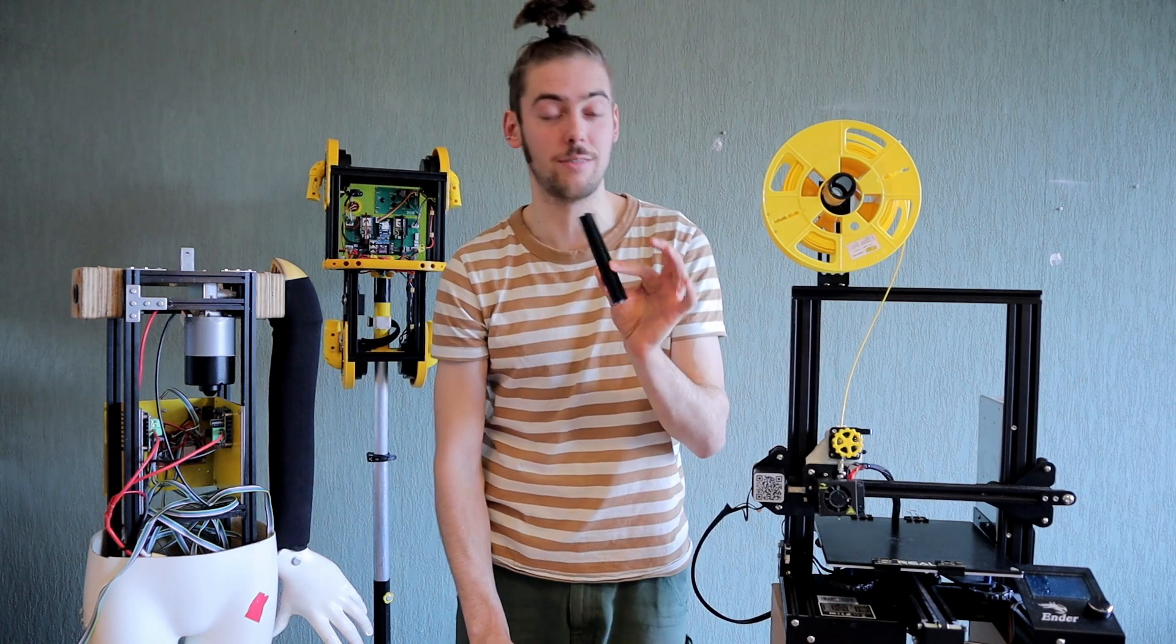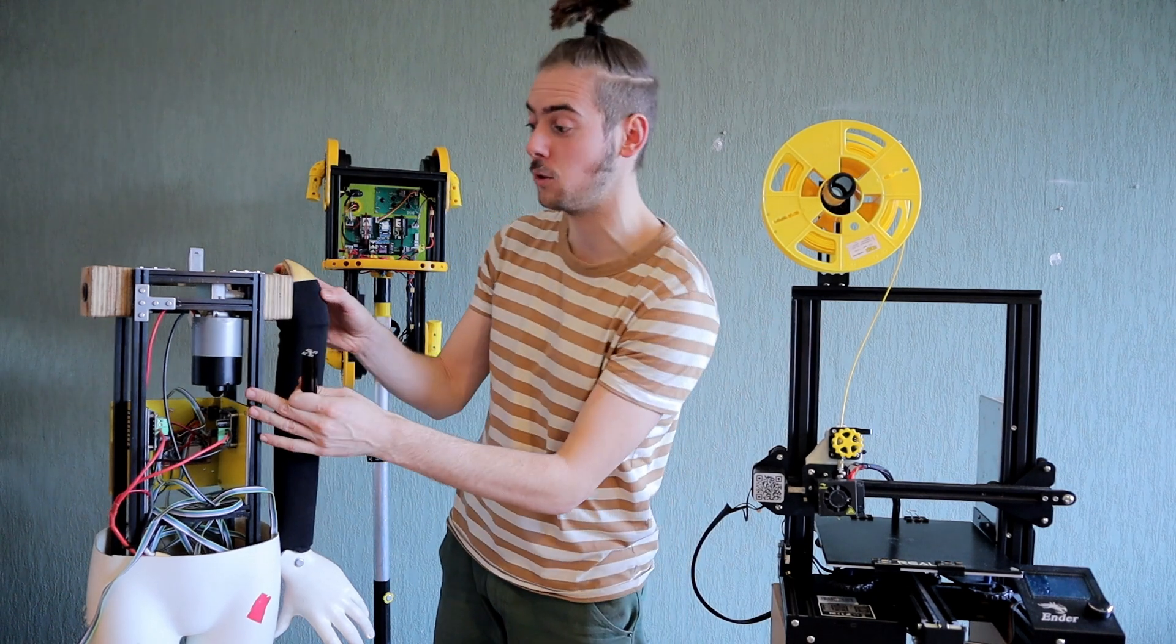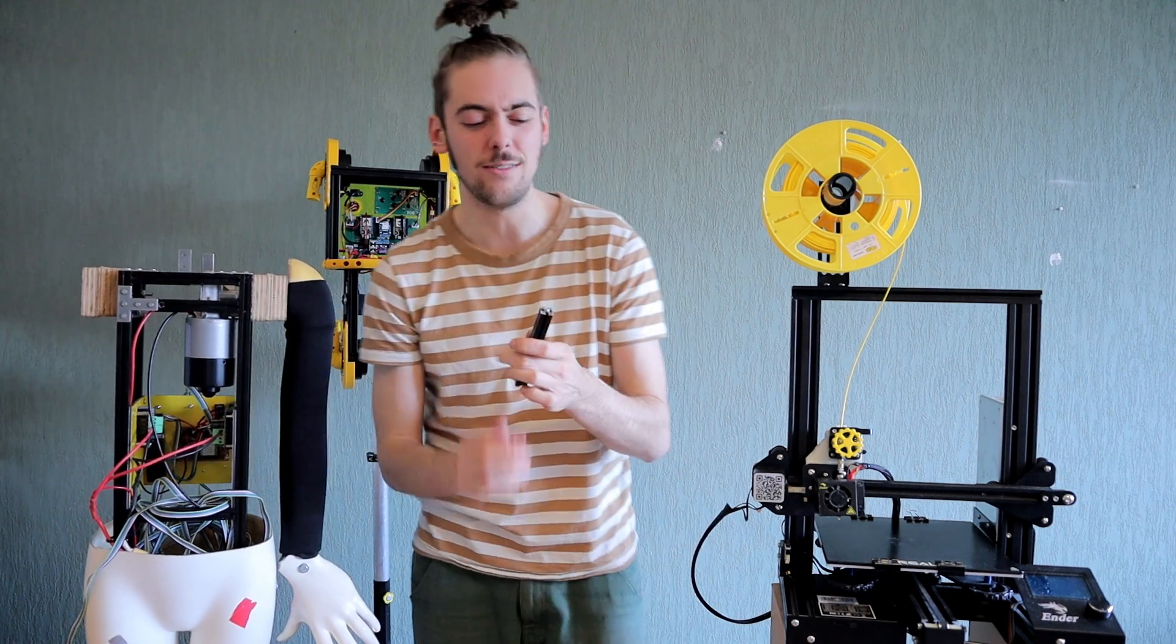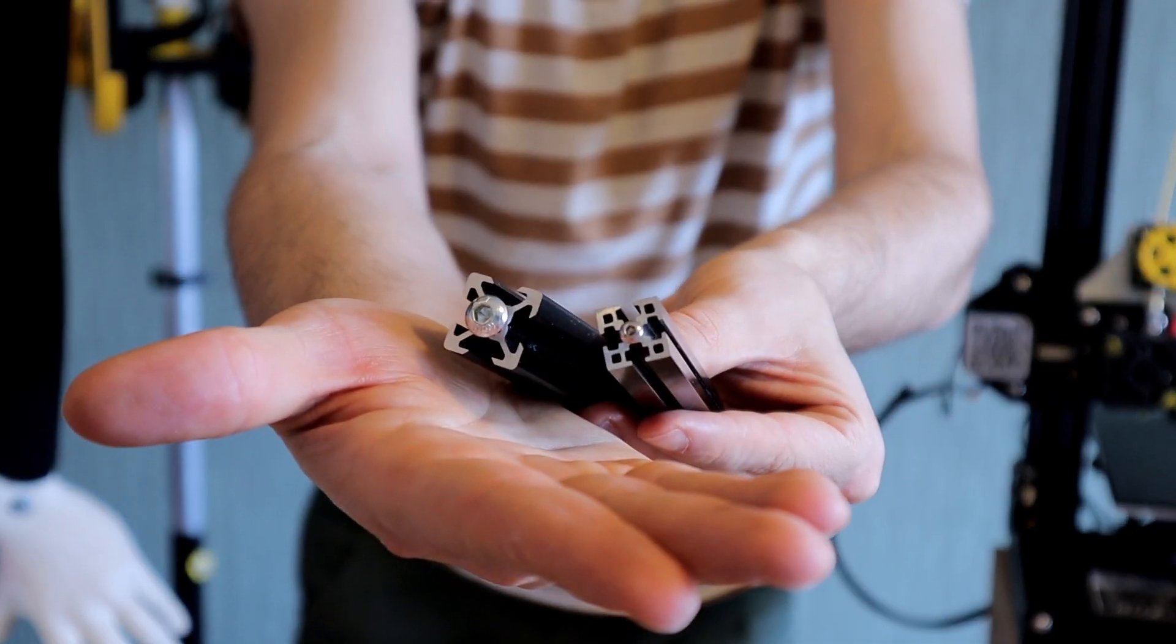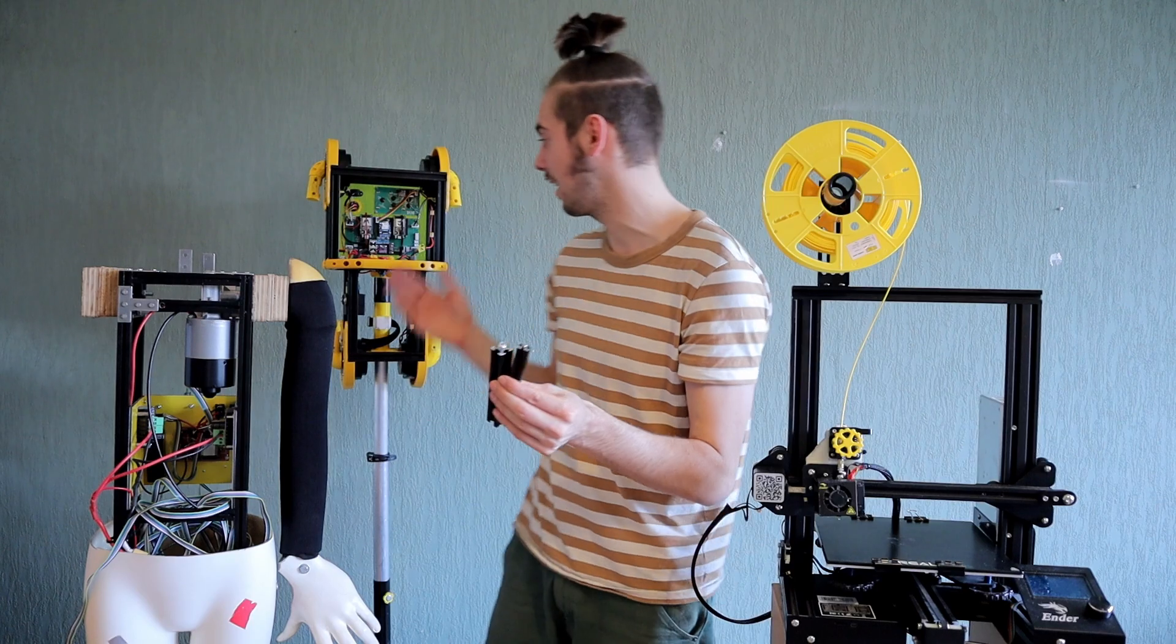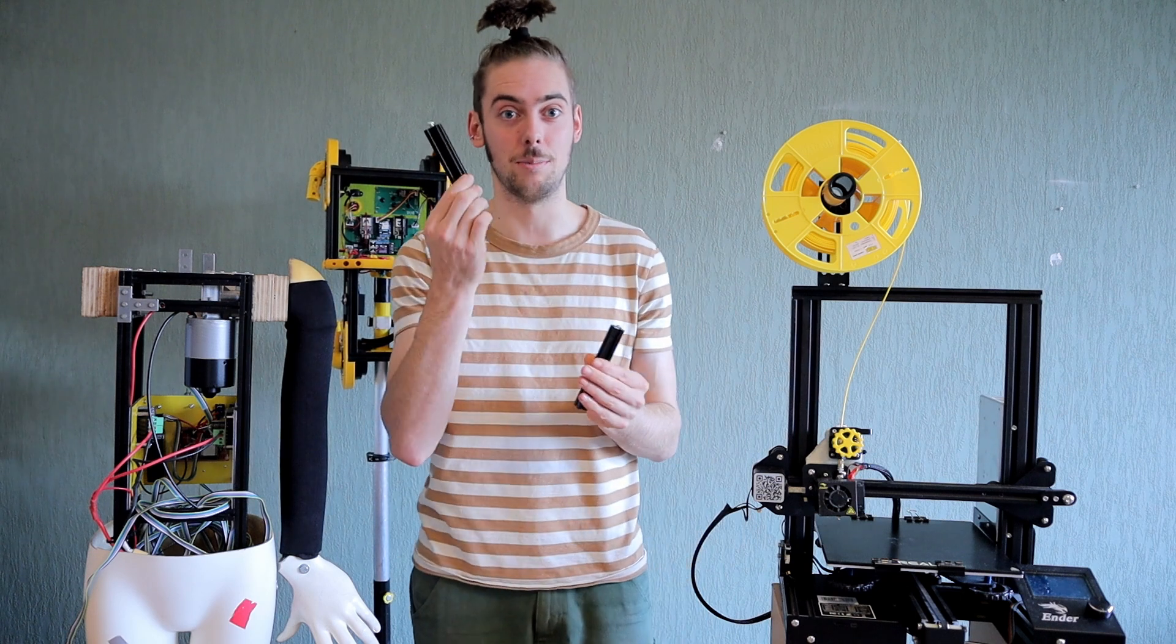But I actually started out with 15-15 which is a smaller size and I used it on my first robots, but 15-15 also uses these fiddly M3 screws whereas 2020 uses M6 size which is much stronger, and that's why ultimately I designed my later robots with this material.